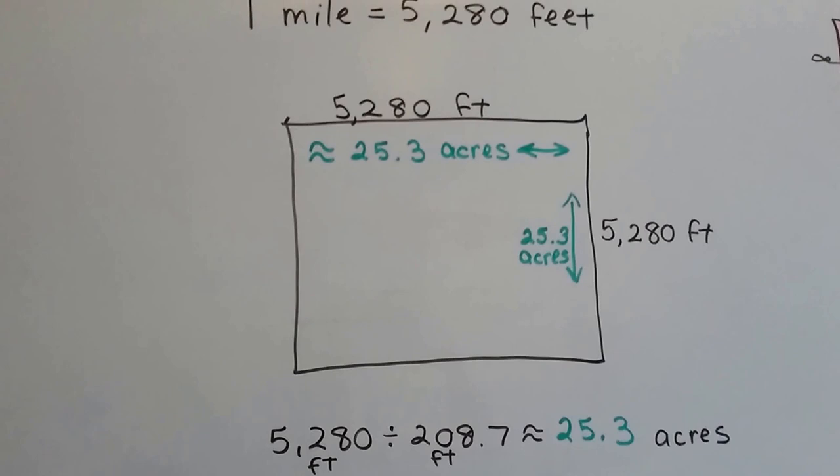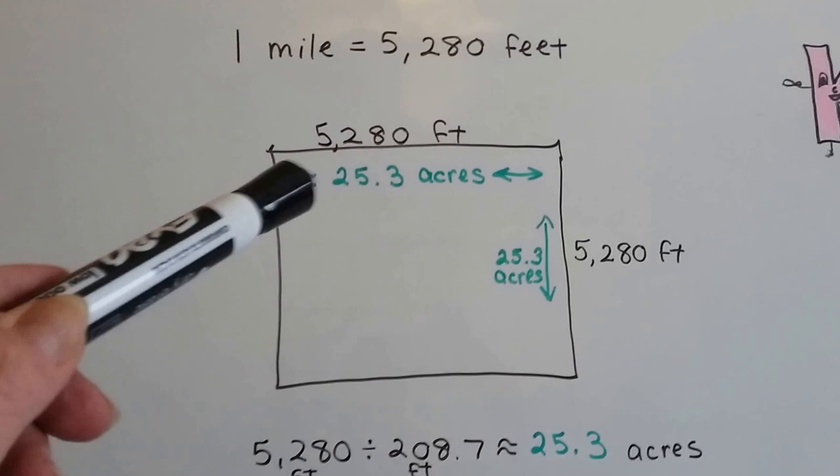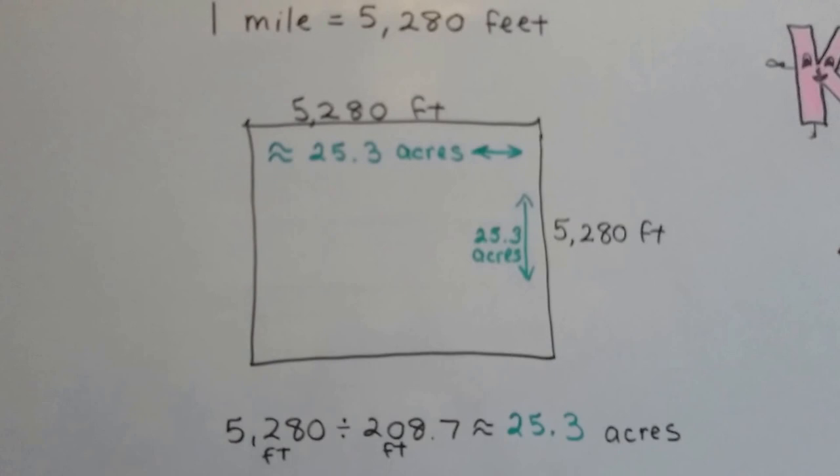So one mile is 5,280 feet, and there would be 25.3 acres approximately in a mile going this way and this way. That would be another 25.3 acres.